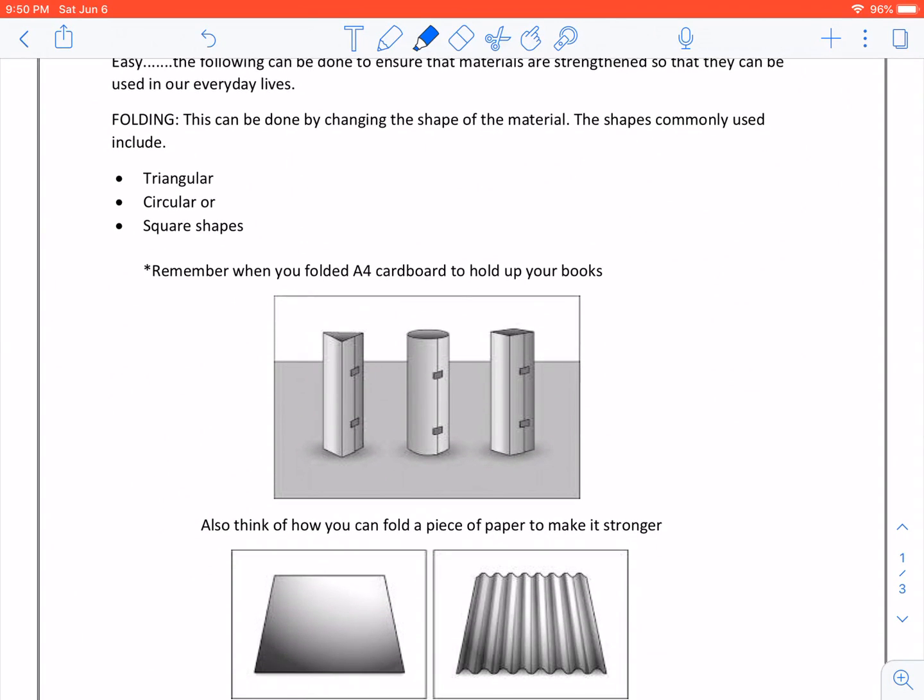Think about folding. This can be done by changing the shape of a material. The shapes commonly used include triangular, circular, or square shapes. Remember when you folded A4 cardboard to hold up your books?